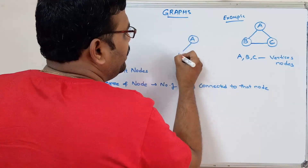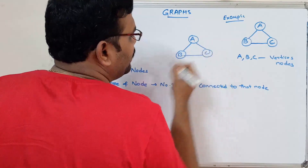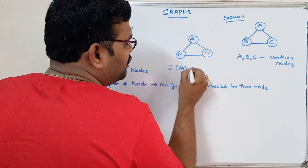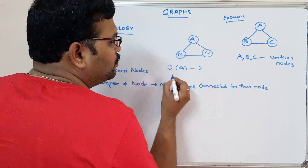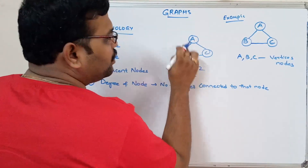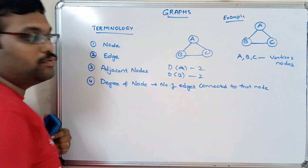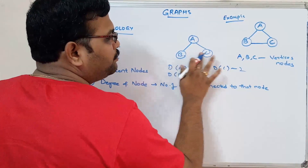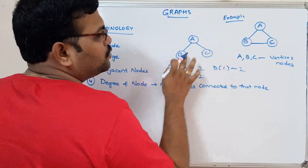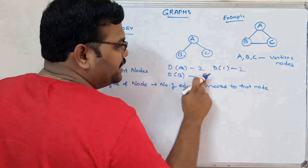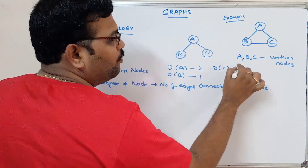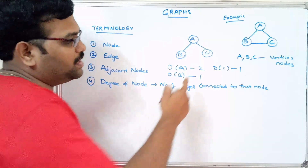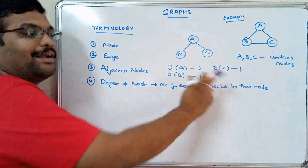For example, take nodes A, B, and C. The degree of A is 2 because A has two edges. The degree of B is 2, and the degree of C is also 2. But in the absence of the B-C edge, the degree of A is 2, degree of B is 1, and degree of C is 1 — because B has only one edge towards A and C has only one edge towards A.